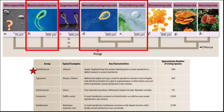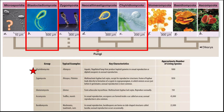The Blastocladiomycota are your water molds. The Zygomycota produce zygotes. Chytrids have a flagellum and are aquatic. The Neocallimastigomycota have multiple flagella. The Glomeromycota are asexual plant symbionts that probably helped plants colonize land. The Basidiomycota are the club fungi, and the Ascomycota are the sac fungi.